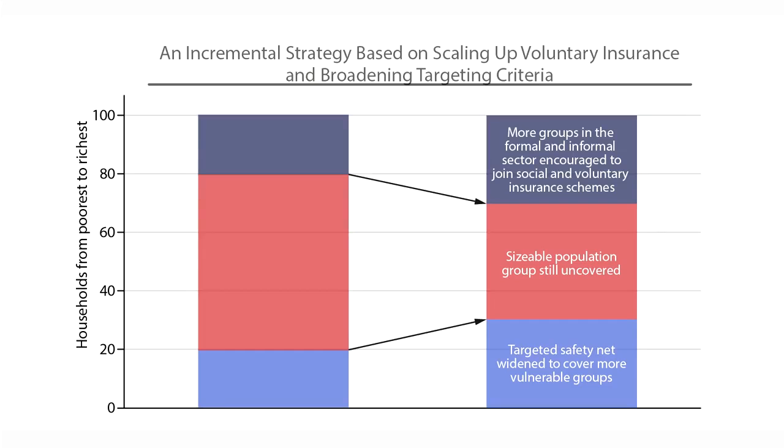How do countries move away from this situation? One approach is to do it slowly and incrementally — extending health insurance schemes from the top down, and being more generous with basic safety net schemes from the bottom up. Unfortunately, this process can take an awfully long time and leave many people uncovered. Countries such as Indonesia, Vietnam, and the Philippines have found that around a third of the population remain uncovered using this approach.